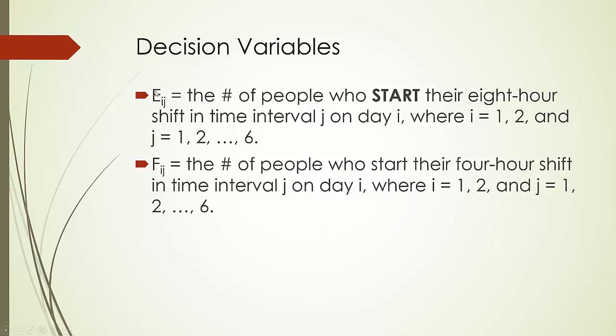The first group is called E subscript ij. E actually over here means 8-hour people. The subscript ij, i means what day it is—day 1 or day 2. So i can take on 2 possible values of 1 or 2. On each day, there are 6 possible time intervals because each time interval is 4 hours long. So j goes from 1 all the way to 6.